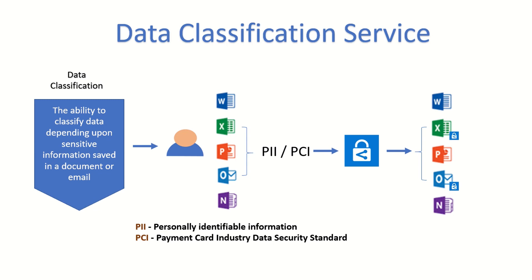Once the document is classified, Azure Information Protection recommends the user to use a particular classification label. The resultant value is a classified document and everything is in place. However, at this stage there is still user intervention required — meaning the user still has the ability to either refuse or accept the suggestion which AIP has given to them.